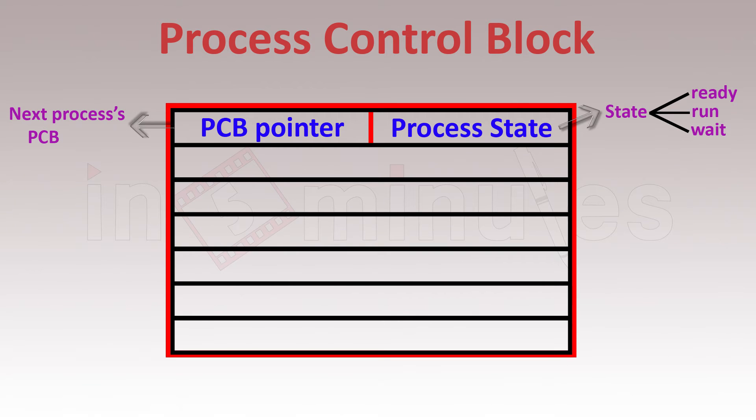After learning who will be loaded next and what is the current state of the process, the next job is identifying the process itself. This is done by the process number. It is a way to identify the process, especially when there are n processes involved.